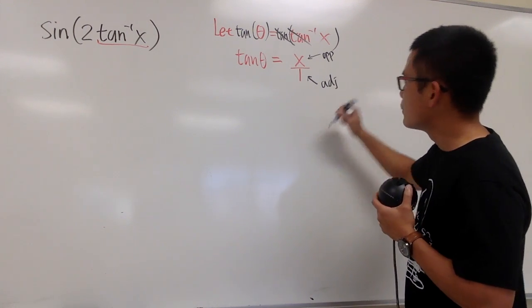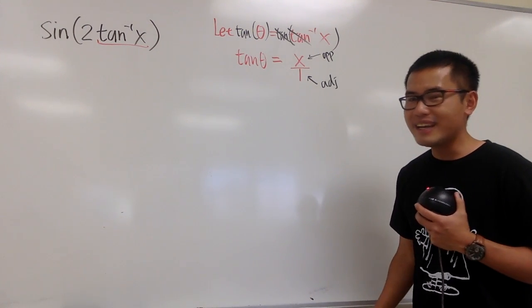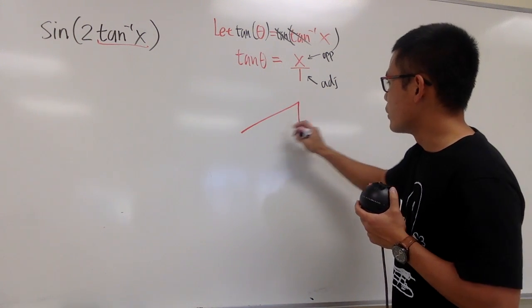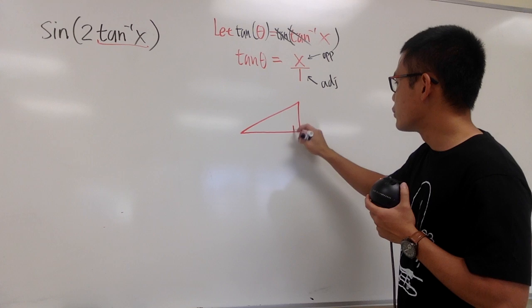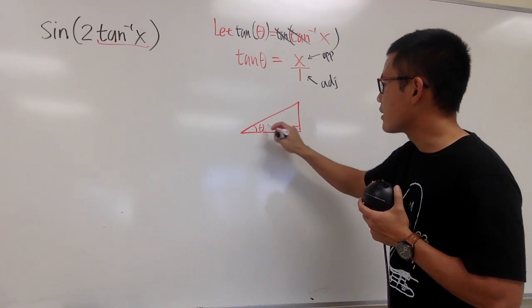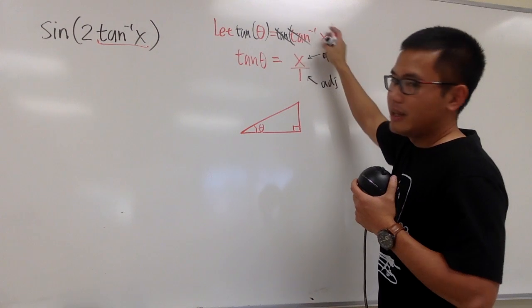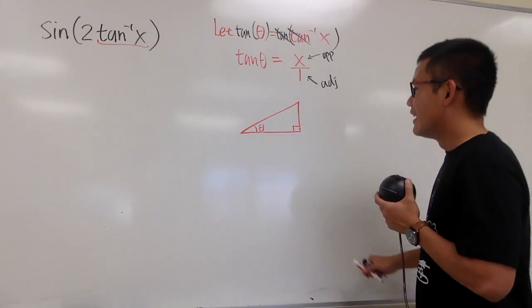With this being done, we can draw a right triangle. Whenever you're doing this, always draw a right triangle this way, just for consistency. Always put the right angle here and put the angle theta here. Once again, the angle theta is the original inverse tangent x.